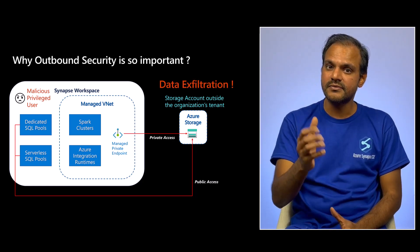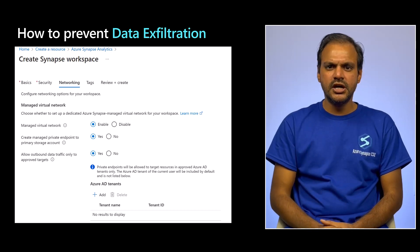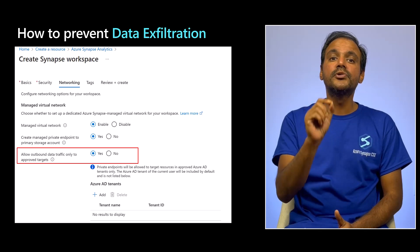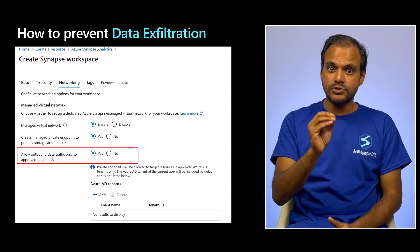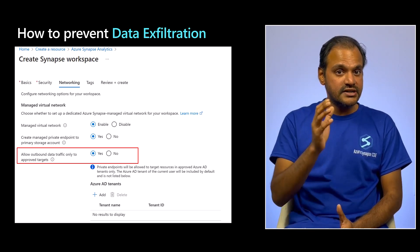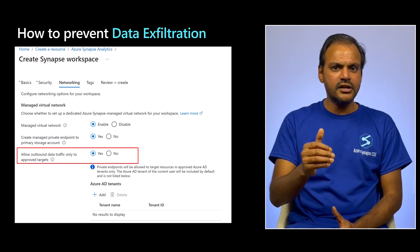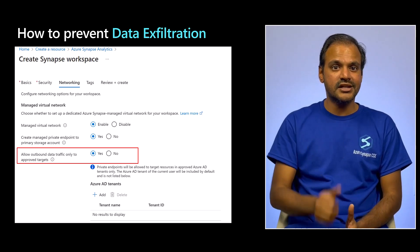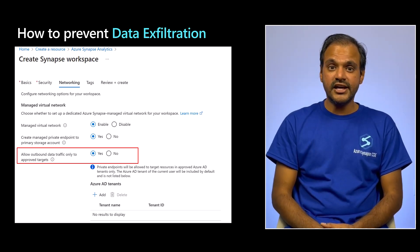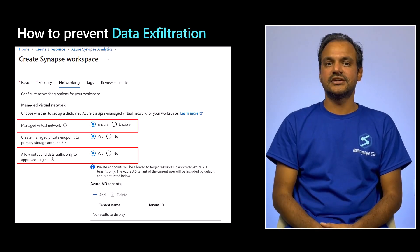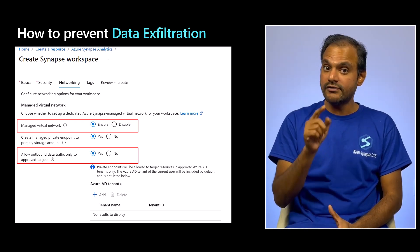This is called data exfiltration. How do you prevent it? With Synapse security it's simple. When creating your Synapse workspace, you can simply enable 'allow outbound data traffic only to approved targets' in the networking section. This setting ensures that all outbound connections from the Synapse workspace, including dedicated SQL pools and serverless SQL pools, can be made only to targets of managed private endpoint connections in an approved Azure AD tenant. Your own tenant is automatically added to this list, but you can add additional tenants after workspace creation — and it can be done only by the owners of the Synapse resource. Note that data exfiltration protection is available only when you enable managed VNet, and just like managed VNet, this setting cannot be modified after the workspace has been provisioned — you must choose it at the time of creation.